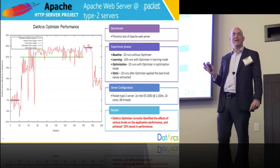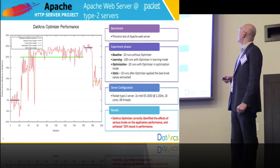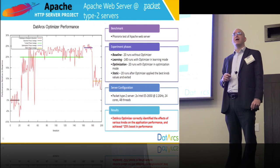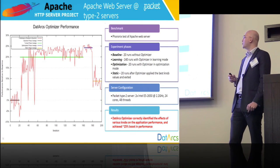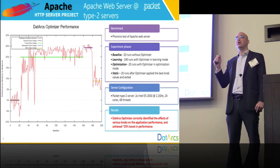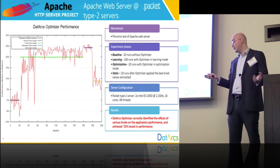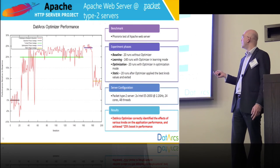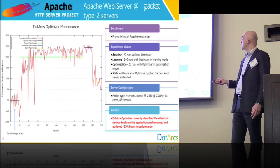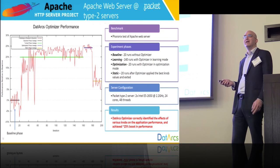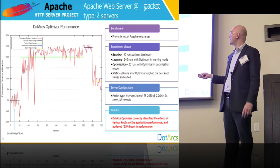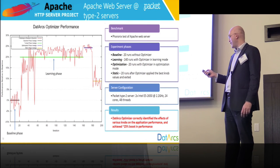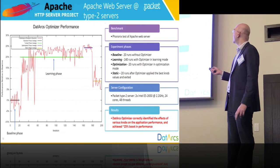Let's look at more realistic applications. We are looking at Apache web server running on a Packet type 2 server. It has two CPUs, E5-2650, 24 core, 48 threads. We are running the Phoronix Apache web server out of the box and trying to optimize it. Here we can see four phases of execution. We are running the workload 200 times. The first phase is the baseline phase — we're running it untouched without our software 20 times, and we normalize all of the results to this outcome.